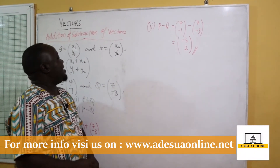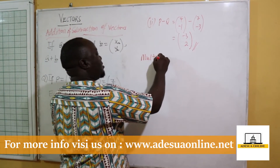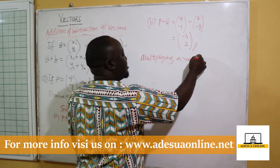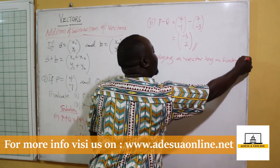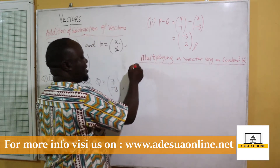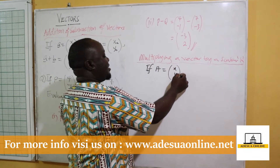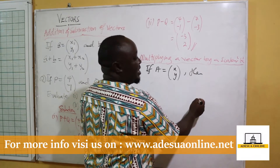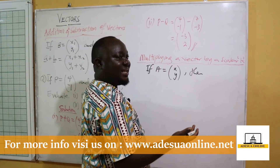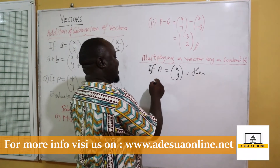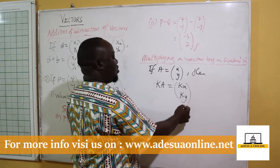Our next topic is multiplying a vector by a scalar k, where k is a constant. If a is equal to (x, y) and k is a scalar, then k times a is equal to (kx, ky).